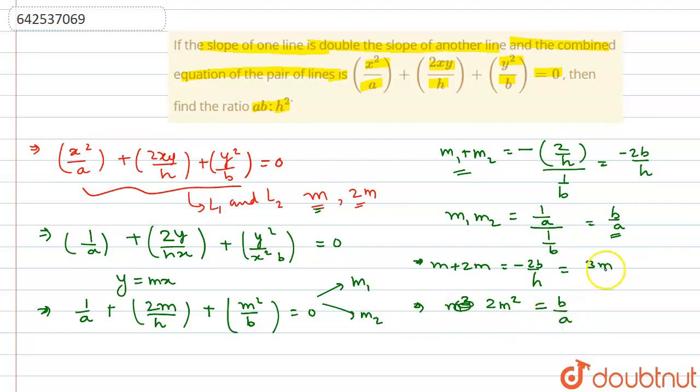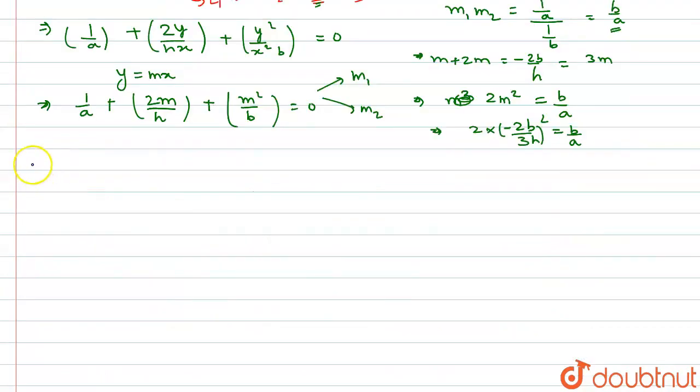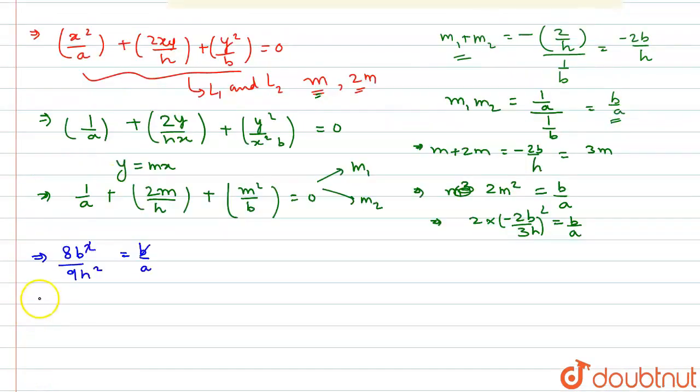From the sum equation, m = -2b/(3h). Substituting into the product equation: 2(-2b/3h)² = b/a. On simplification, we get 8b²/(9h²) = b/a. One b cancels, giving us 8b/(9h²) = 1/a.